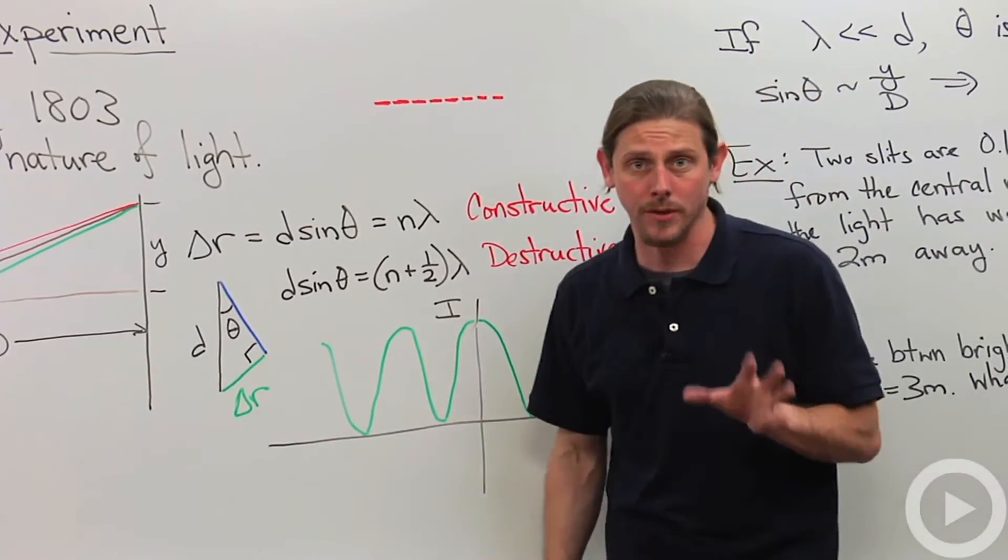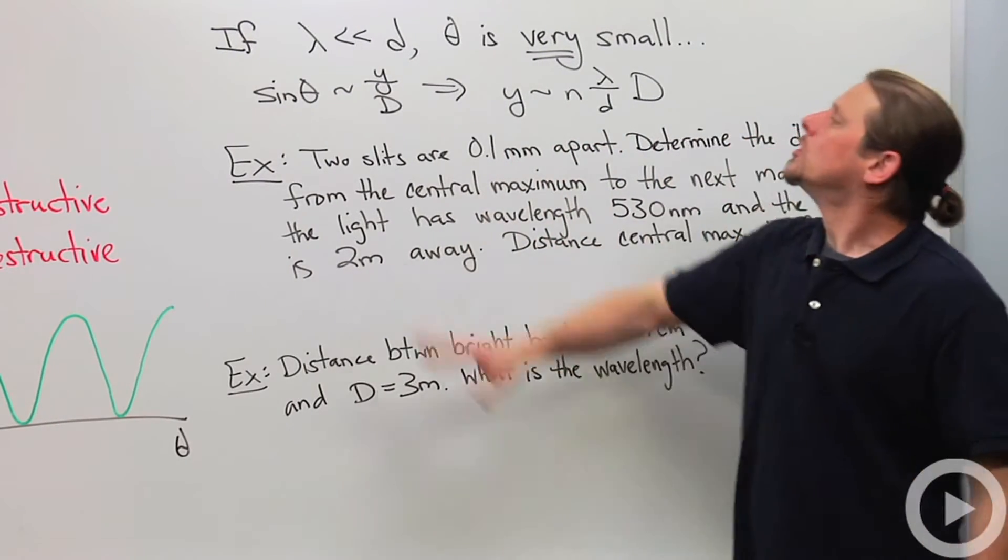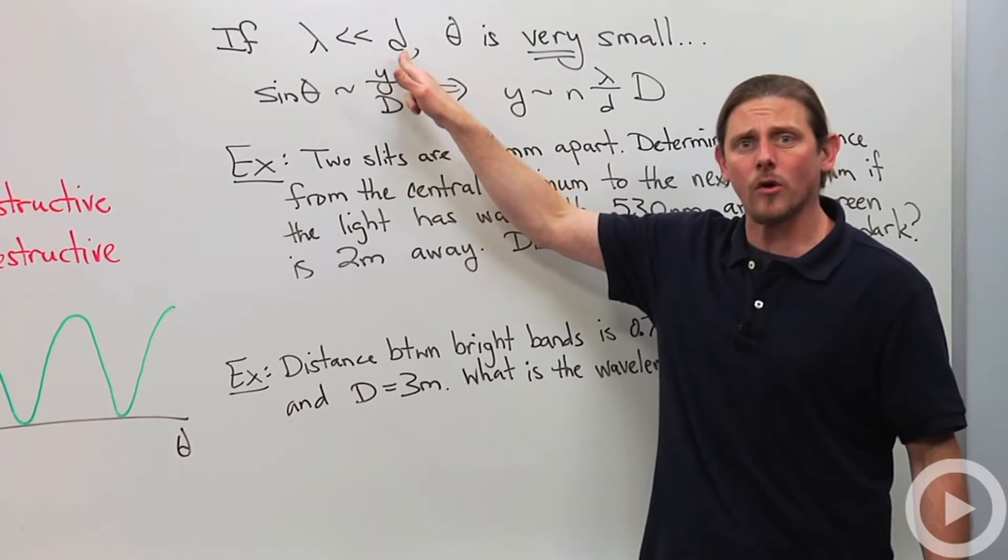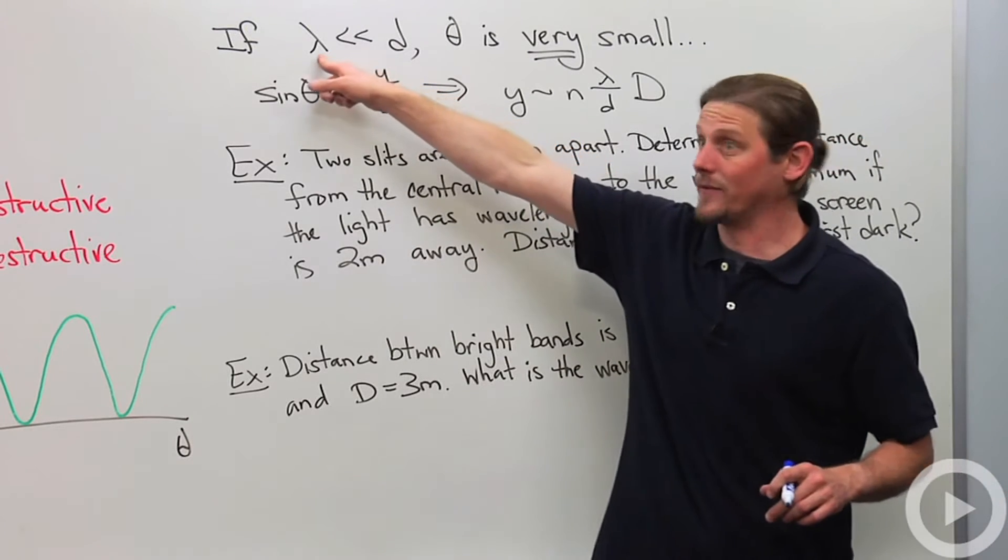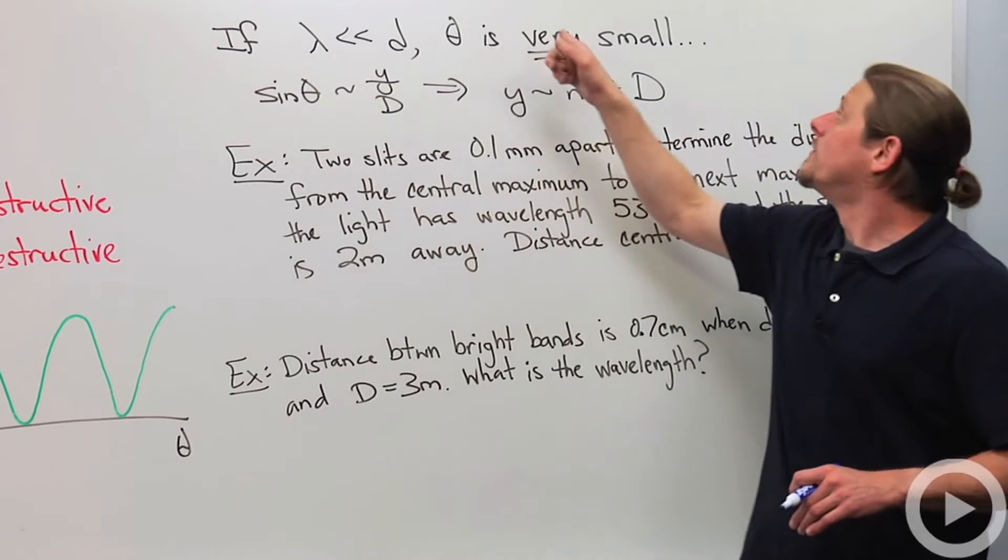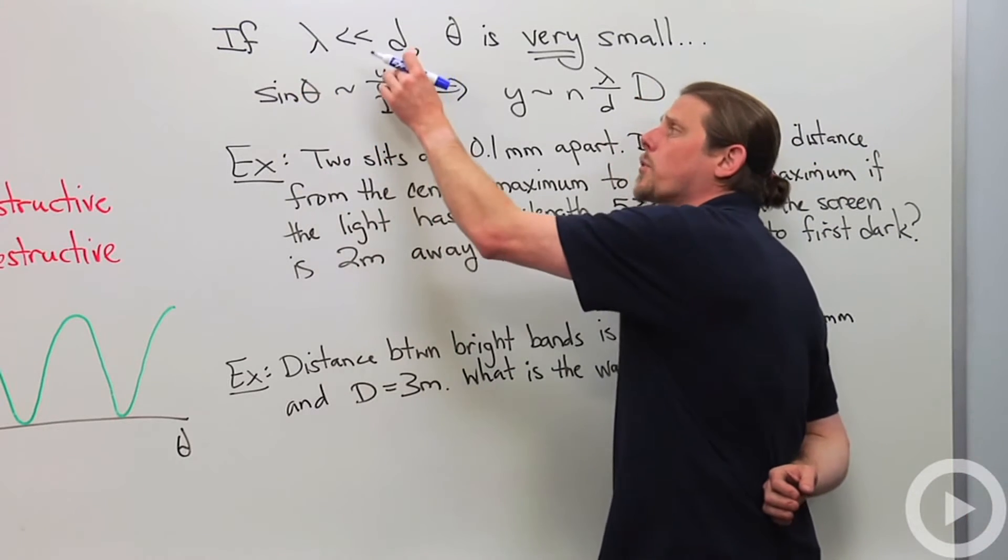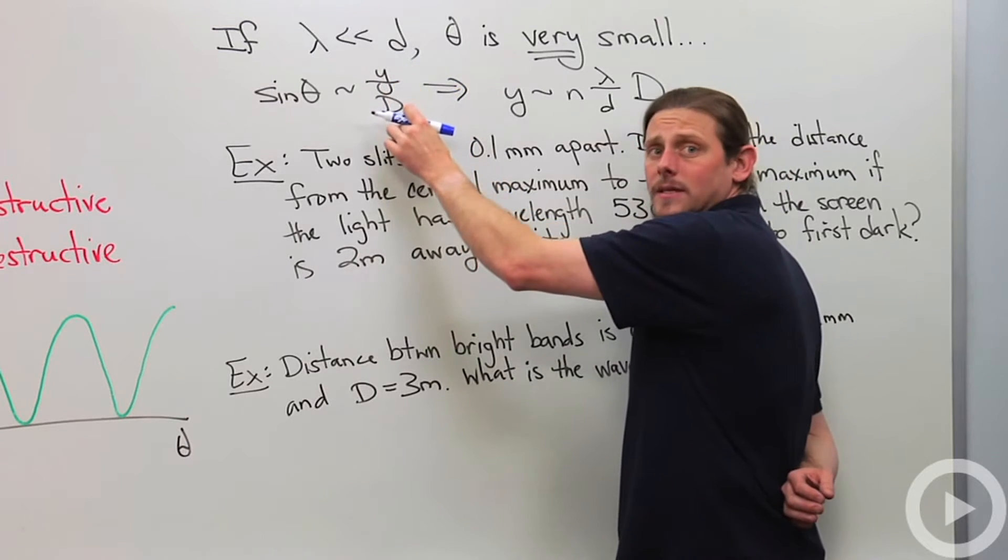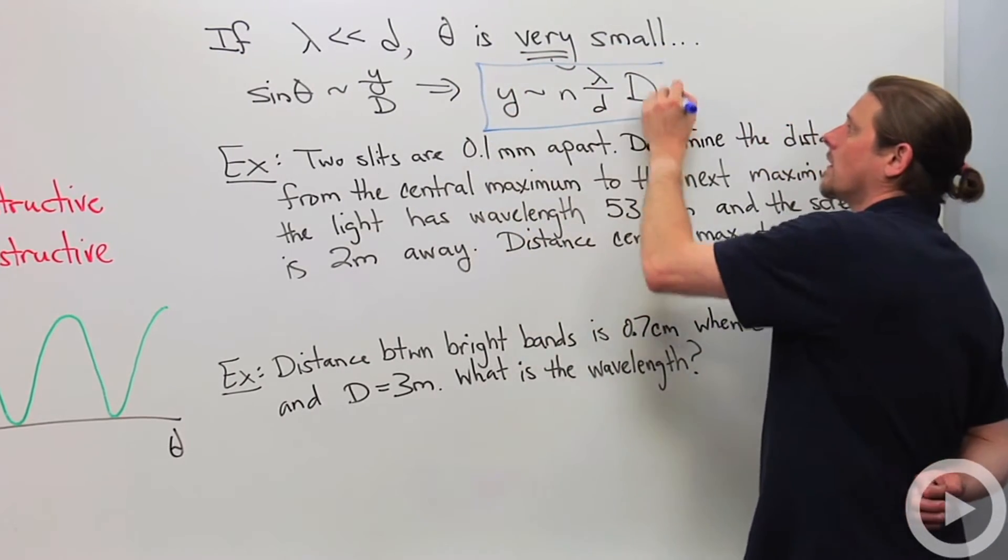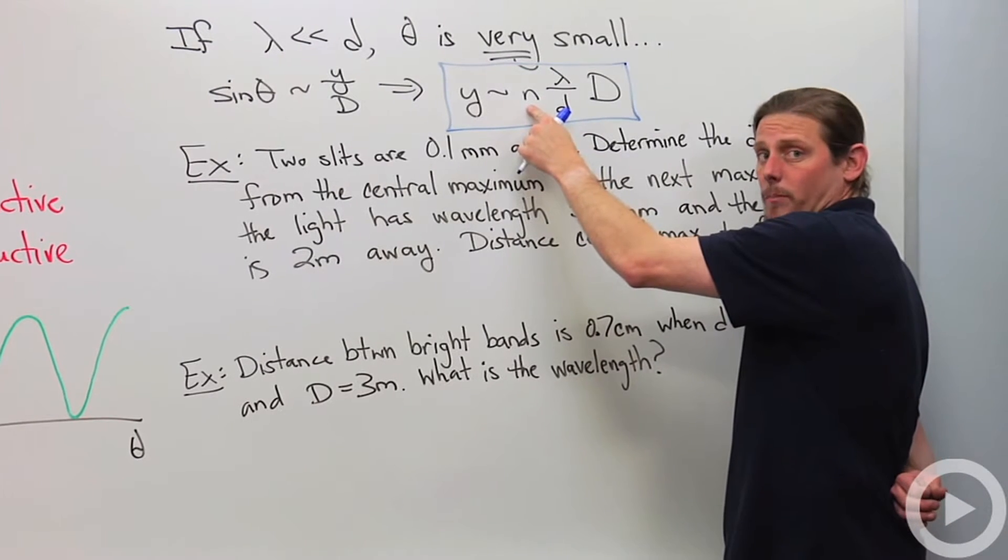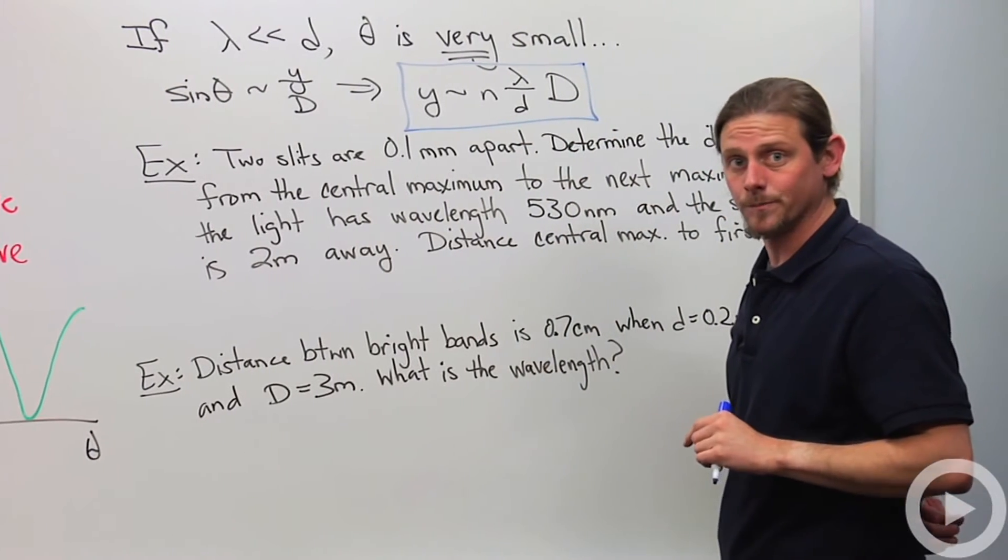So let's go ahead and do some problems with this. It's not difficult to do, but it takes a little bit of work. So the first thing I want to say is if the wavelength is much, much smaller than this distance d between the two slits, which is almost always the case, especially with light experiments, because the wavelength of visible light is really small, then theta is going to be extremely small. And so then we can use this wonderful approximation and say that the sine of theta is approximately y divided by the distance to the screen D. So then that allows us to write y is approximately an integer multiple of the wavelength divided by the distance between the two slits times the distance to the screen.